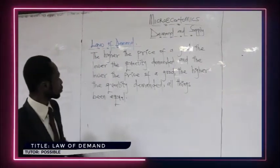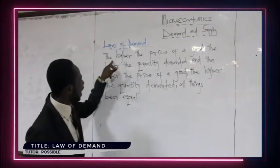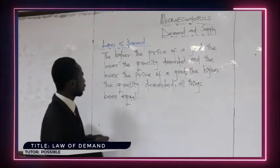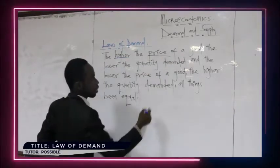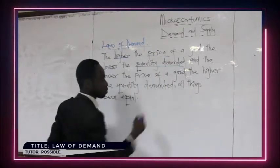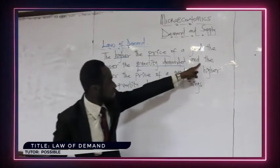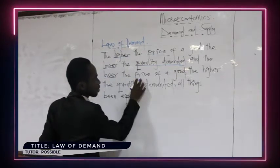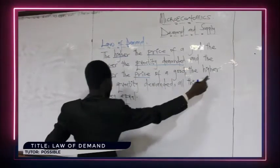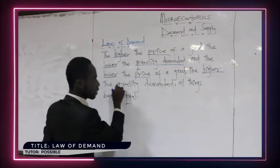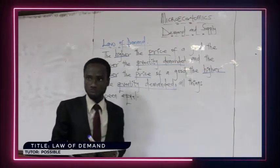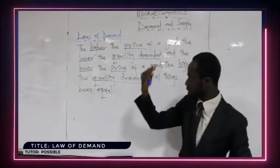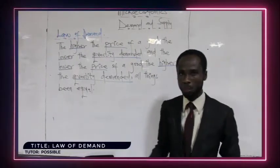The law of demand says that the higher the price of a commodity, the lower the quantity demanded. And the lower the price of a good, the higher the quantity demanded.